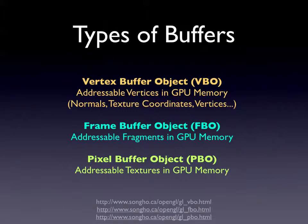There are three main types of buffers: the vertex buffer object, the frame buffer object, and the pixel buffer object. The vertex buffer object basically allows you to address vertices — also texture coordinates, normals, and all those vectors on the GPU — so you can store this type of information on the GPU without transferring it backwards and forwards. The frame buffer object is addressable fragments on the GPU, meaning the output you get from your render you can then address, manipulate, and change. The pixel buffer object is basically being able to address a texture.